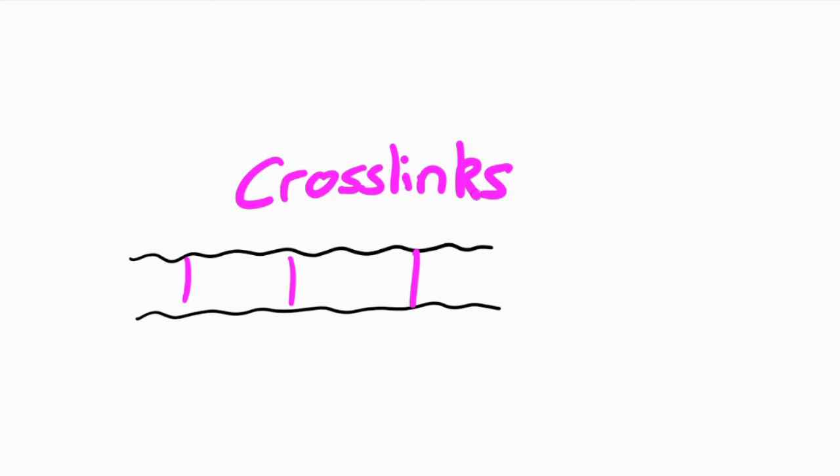Now that we have polymers, imagine stabilizing interactions between individual chains. These interactions linking the polymer chains are called cross-links, and can be either chemical, such as covalent bonds, or physical, such as hydrogen bonding, ionic or hydrophobic interactions.